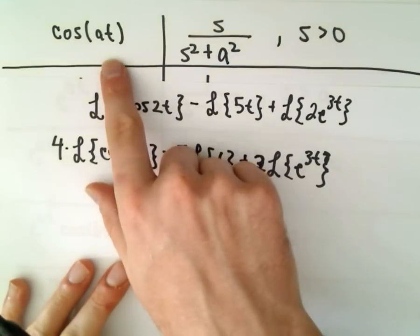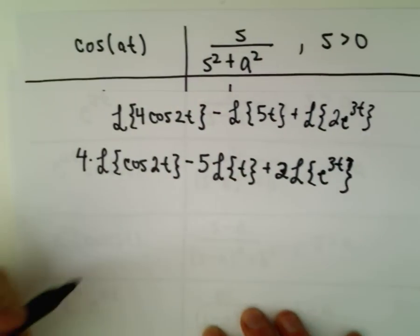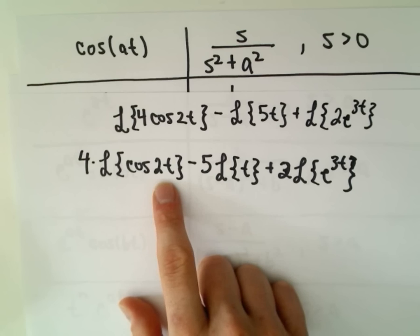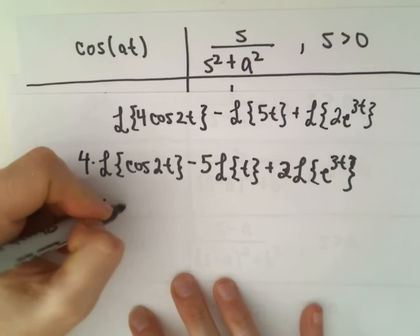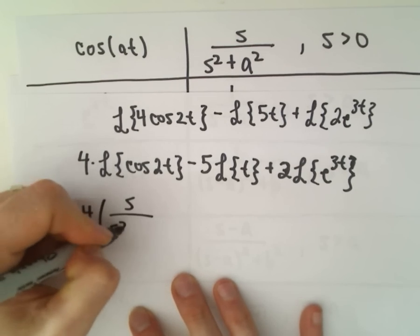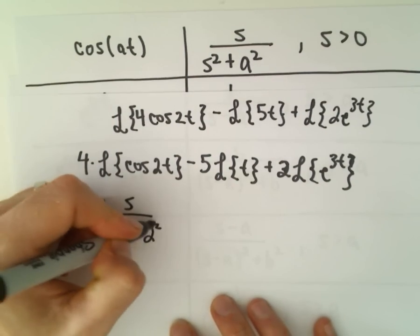For cosine of at we get s over s squared plus a squared. So in this case our number being squared is 2, so the Laplace transform will get s over s squared plus 2 squared.